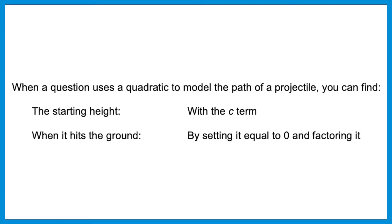This is another popular brand of question on both tests. When a question uses a quadratic to model the path of a projectile, the starting height is the c term. You can figure out when it hits the ground by setting it equal to zero and factoring. It's like Melissa's balloon — the starting point is the y-intercept and the ending point is the x-intercept, just tested on a parabola rather than a line.